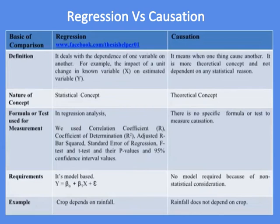The requirement of regression is that it is model-based, such as y = β₀ + β₁x + e, while the requirement of causation is that no model is required because of non-statistical consideration.